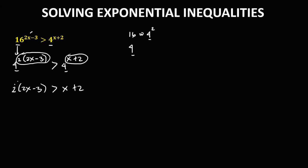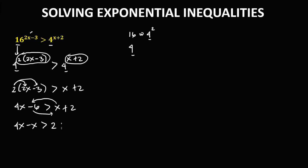Simplify to solve for x. Distribute: 2 times 2x is 4x, and 2 times negative 3 is negative 6, greater than x plus 2. Transpose the positive x to the left side: 4x minus x, greater than 2 plus 6. That gives 3x greater than 8. Divide both sides by positive 3.